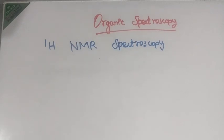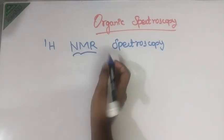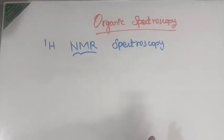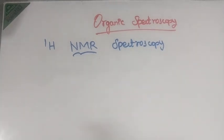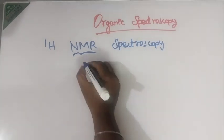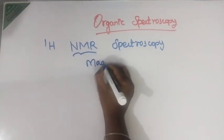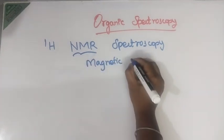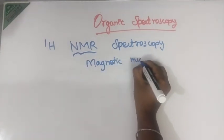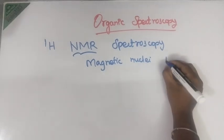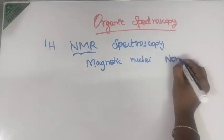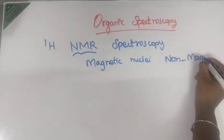What is NMR spectroscopy? NMR is nothing but nuclear magnetic resonance. So you can classify this into magnetic nuclei and non-magnetic nuclei.